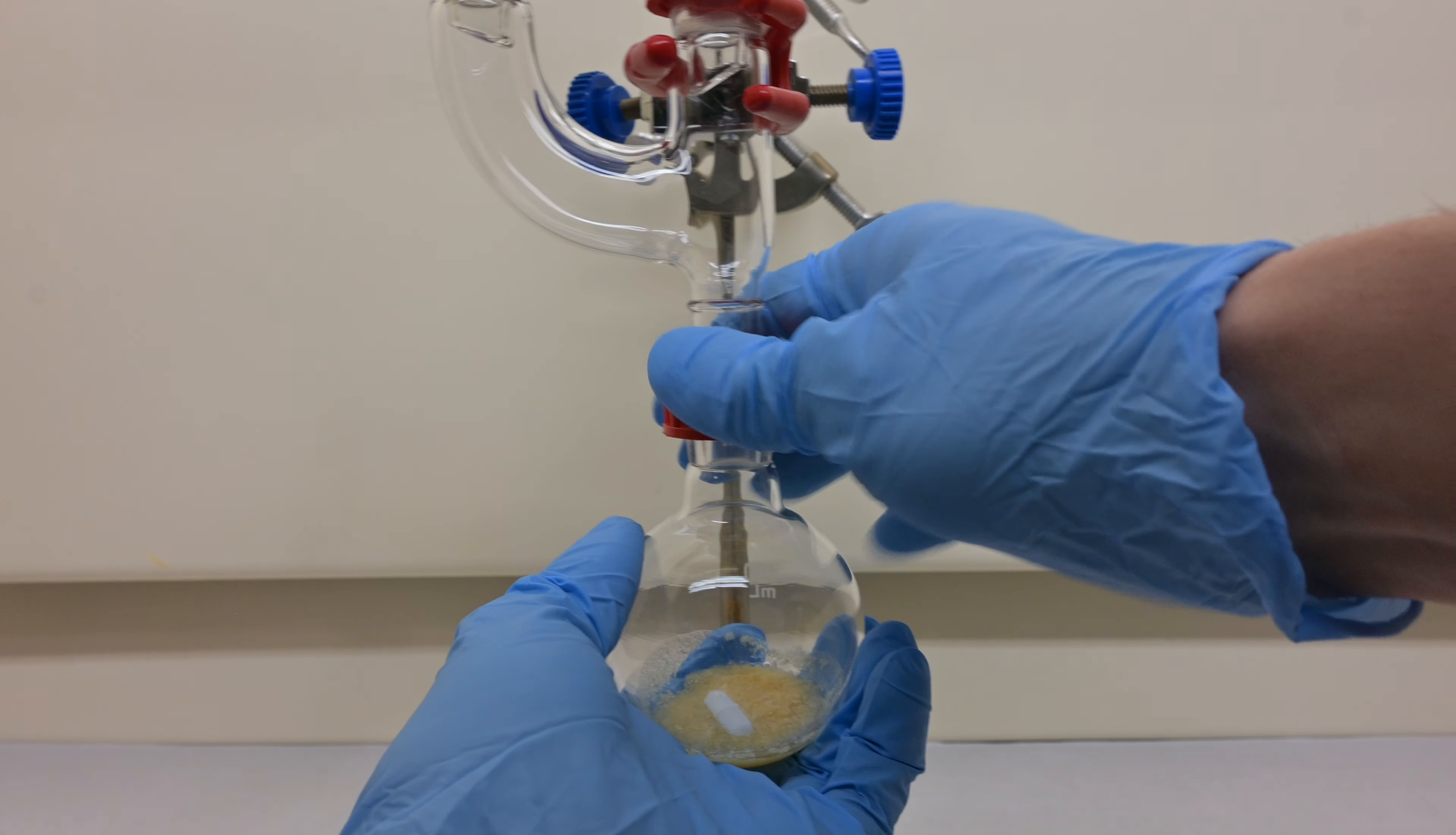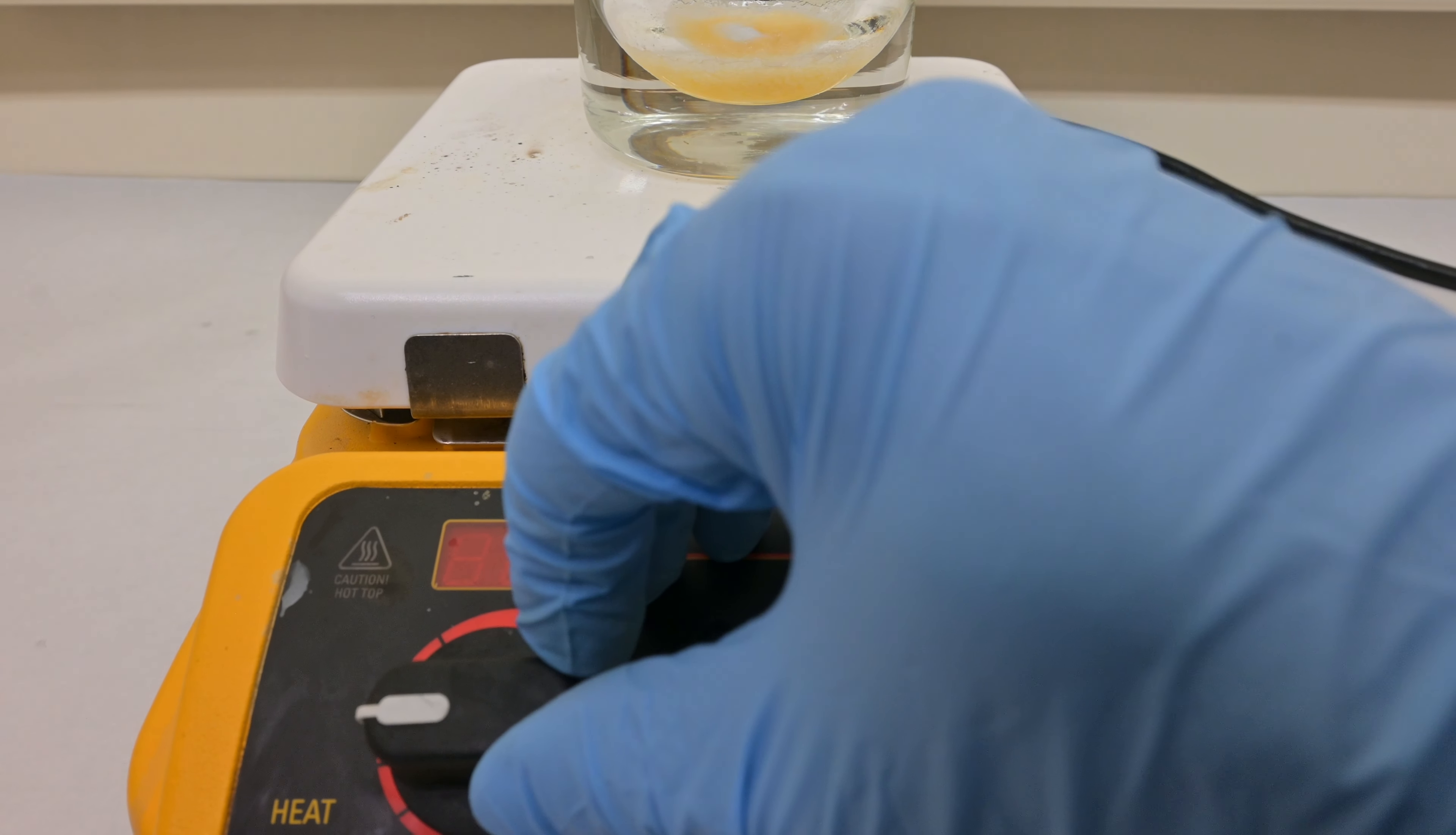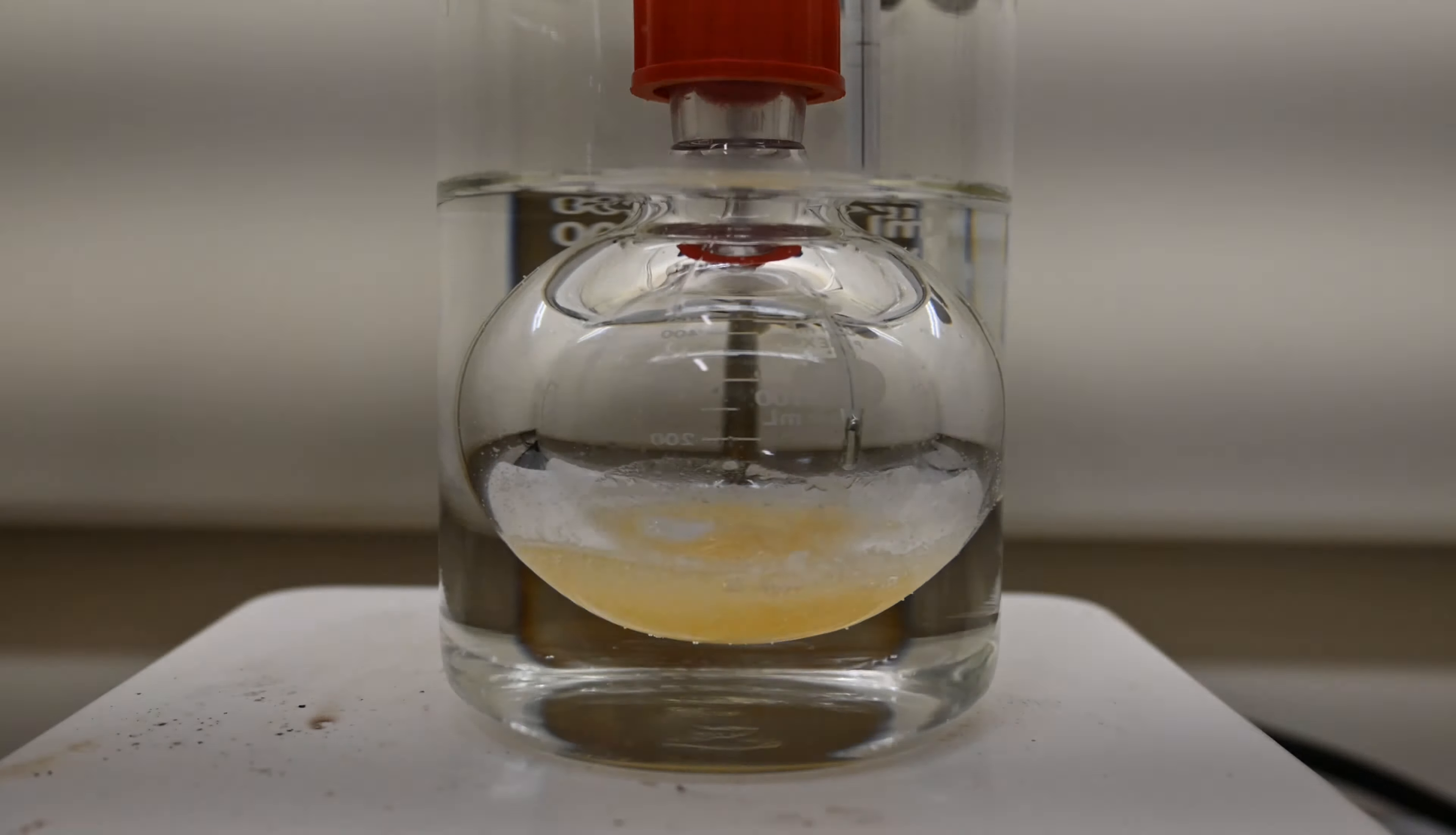Reattach the flask to the reaction apparatus and heat the mixture gently under reflux for about 30 minutes at 90 degrees Celsius. During this time, the M-toluic acid reacts with the thionyl chloride, releasing sulfur dioxide and hydrogen chloride gases, which indicates the progress of the reaction.